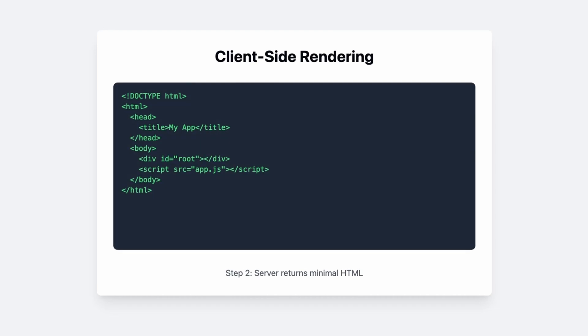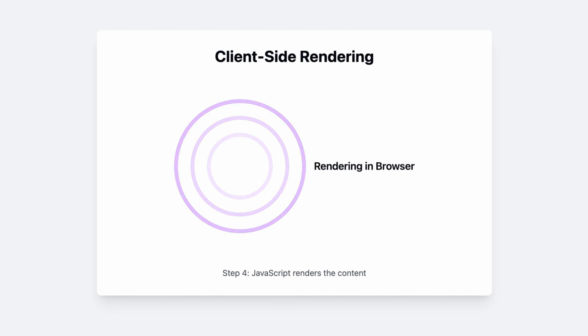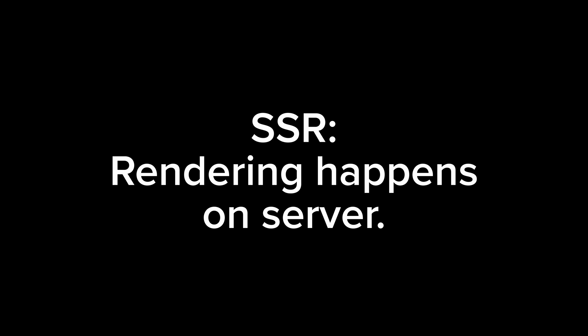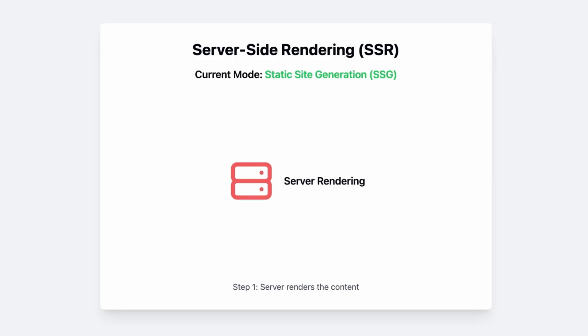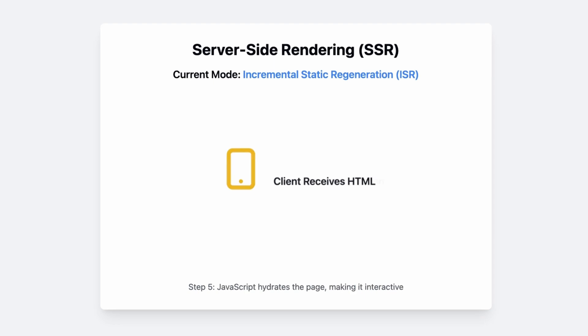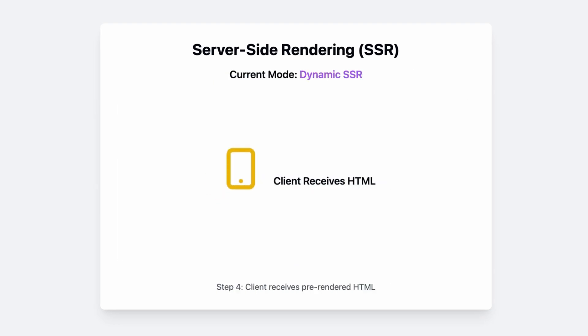In client-side rendering, the browser makes a request to the server, the server sends some HTML along with some JavaScript, and that JavaScript gets executed in the browser to build out the entire page. In server-side rendering, rendering happens on the server. If rendering happens at build time it is either SSG (Static Site Generation) or ISR (Incremental Static Regeneration). When rendering happens on every request, we call it dynamic rendering.